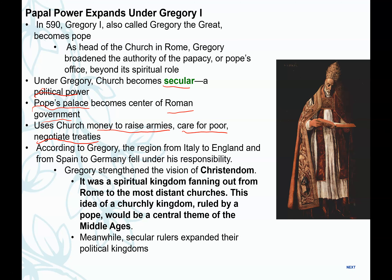Gregory believed his power extended beyond Rome to all Christians who followed the same faith — from Italy to England, from Spain to Germany. He created the concept of Christendom: the idea that all Christians are unified together, not just within one region. He used Frankish influence to spread his authority over distant churches around the world.